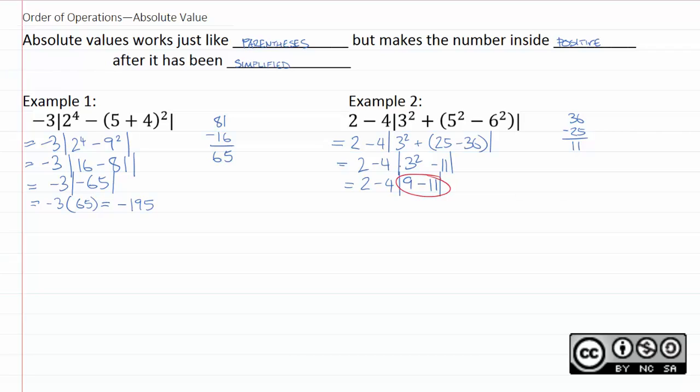So, now, we just do 9 minus 11. Well, we know that's negative 2. So, we'll now have 2 − 4 times the absolute value of negative 2. We now have our absolute value expression simplified as far as it will go. We're just taking the absolute value of a single number.